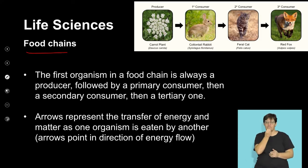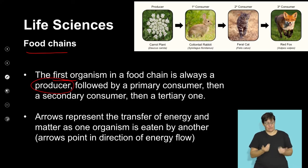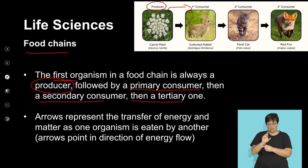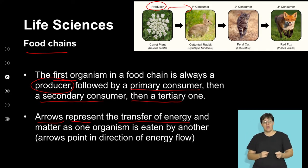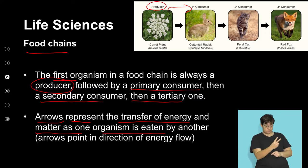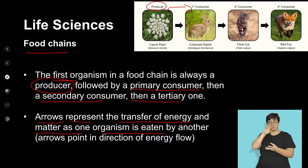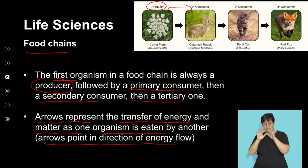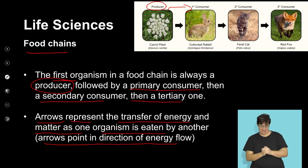In a food chain, the first organism is always a producer, followed by the primary consumer, then secondary consumers, then the tertiary consumer. The arrows represent the transfer of energy and matter from one organism eaten by another. Importantly, the arrows point the direction of energy flow — energy flows in one direction, from producers all the way to tertiary consumers.